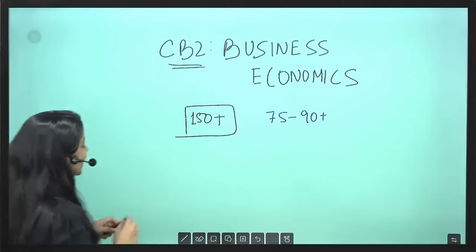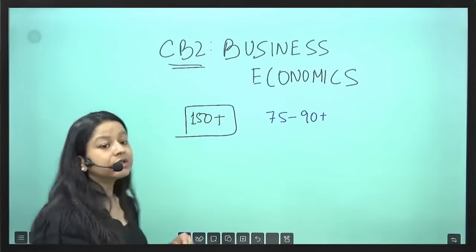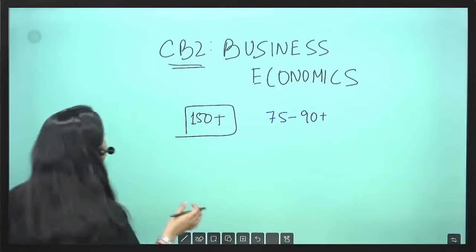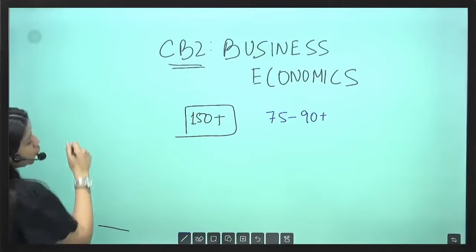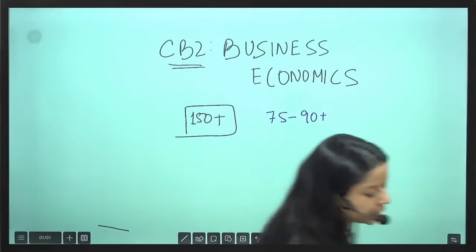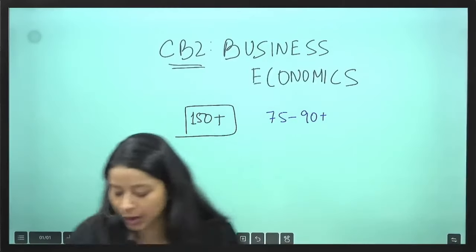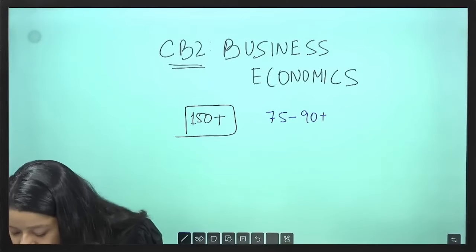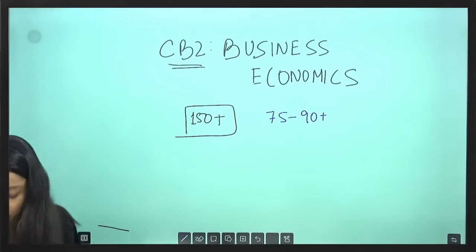Now let's understand quickly what is the structure of CB2 paper. In CB2, usually you will see that there is full MCQ coming in. So it will be very easy - there is no such thing.